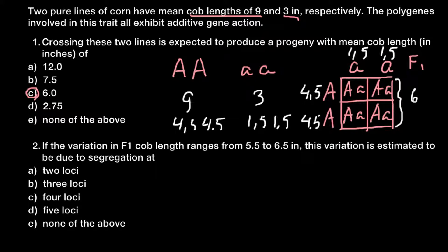Now, second question. If the variation of F1 cob lengths ranges from 5.5 to 6.5 inches, this variation is estimated to be due to segregation at... And once again, here are the five answers to choose from. How are we going to solve this problem? I want to show you another example.